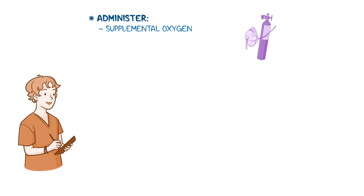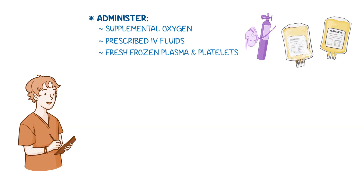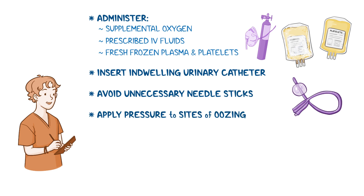Then, administer supplemental oxygen and the prescribed IV fluids to prevent hypovolemia, as well as fresh frozen plasma and platelets to promote clotting and slow bleeding. Also, insert an indwelling urinary catheter to monitor urine output. Be sure to avoid unnecessary needle sticks and apply pressure to any sites of oozing. Continue to monitor your client's CBC.